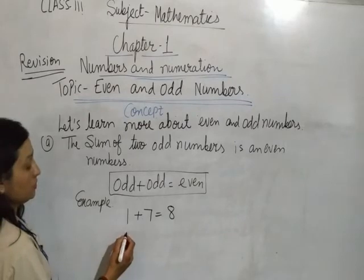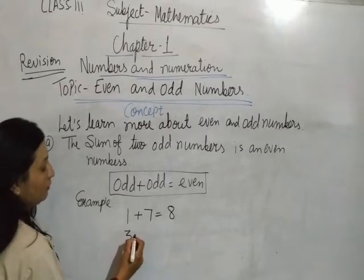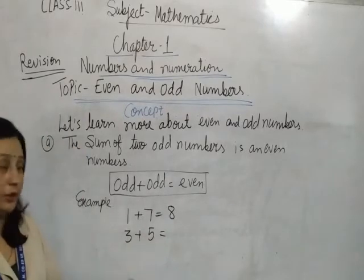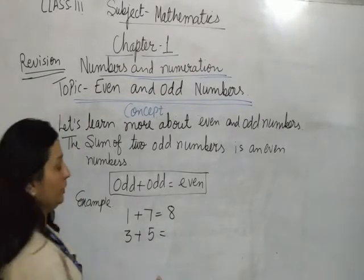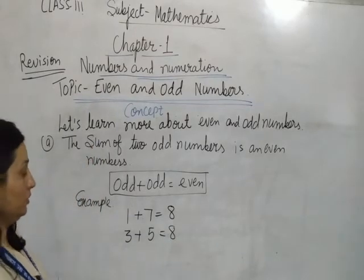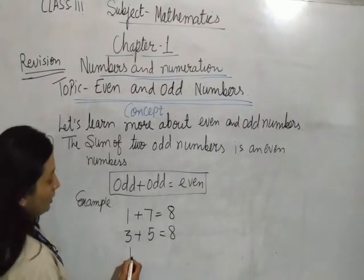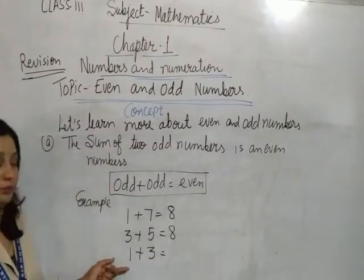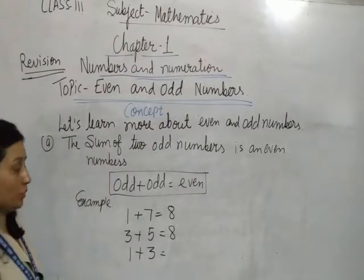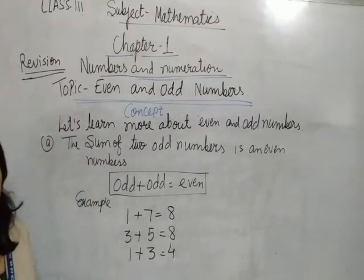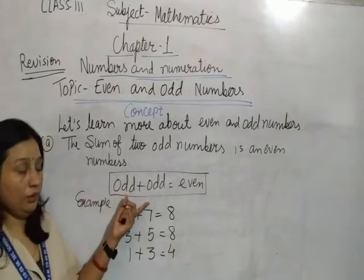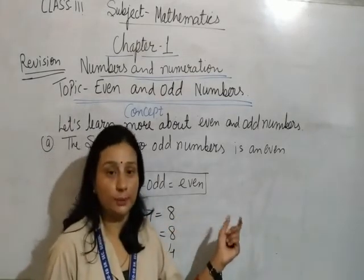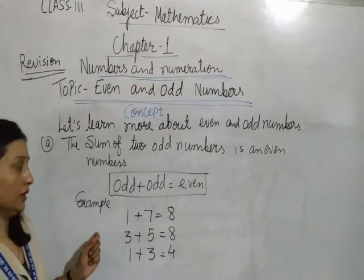More examples: 3 plus 5 — 3 is an odd number, 5 is an odd number. 3 plus 5 equals 8. Also, 1 plus 3 equals 4. So the sum of 2 odd numbers is always an even number.